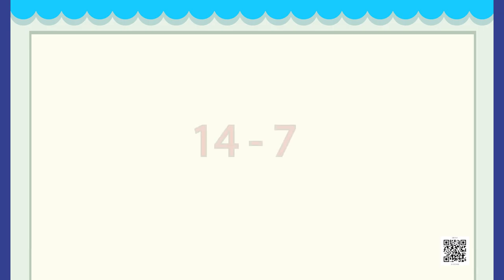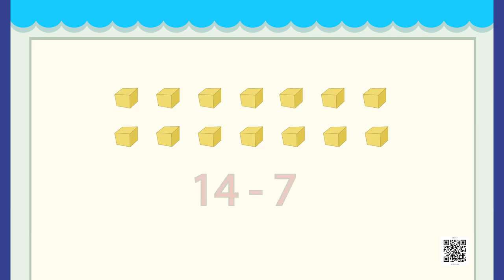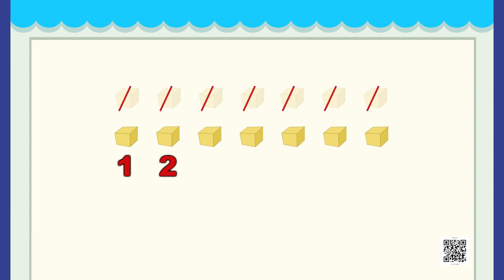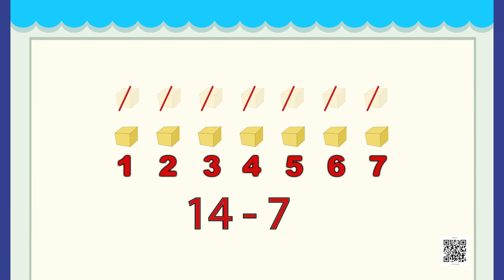Next we have some more yellow blocks. Let's see 14 minus 7. That means we had 14 blocks from which we removed 7 blocks. How many are left? Can you count the remaining ones? Let's do it together: 1, 2, 3, 4, 5, 6, 7. We are left with 7 blocks. So 14 minus 7 equals 7.